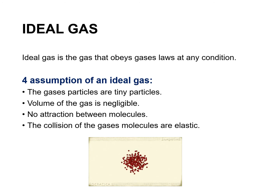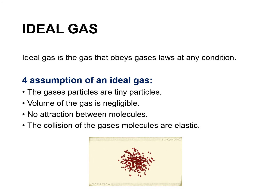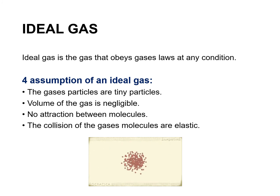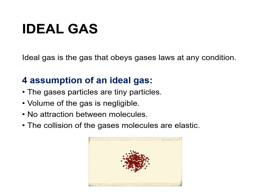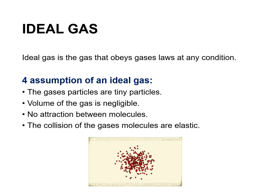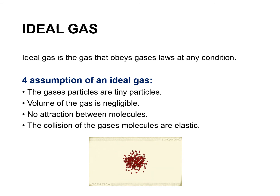Ideal gas is the gas that obeys gases' laws at any condition. Ideal gas assumes all four kinetic theory of gas postulates: they are small and tiny particles, the volume and attraction are negligible, and the collisions of the gas are elastic.